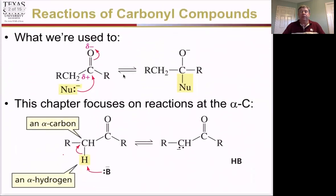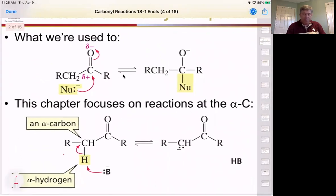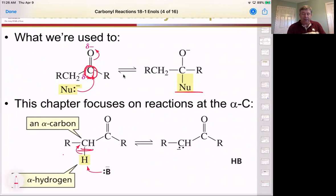Up to now, we've been using the carbonyl as our functionalized point, where we use the partially positive side of the carbonyl to act as our reaction site, and then attack it with nucleophiles to give either a substitution product or an addition product. This chapter, we're focusing on the carbon next to the carbonyl — we call that the alpha carbon, and we call the hydrogen on it the alpha hydrogen.